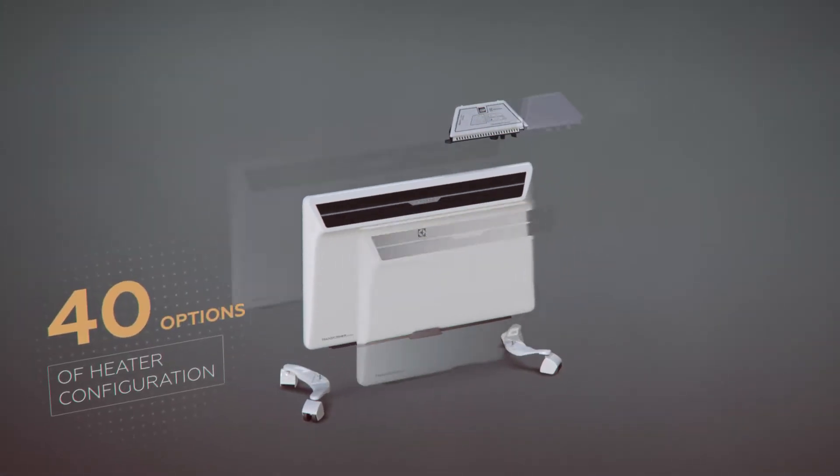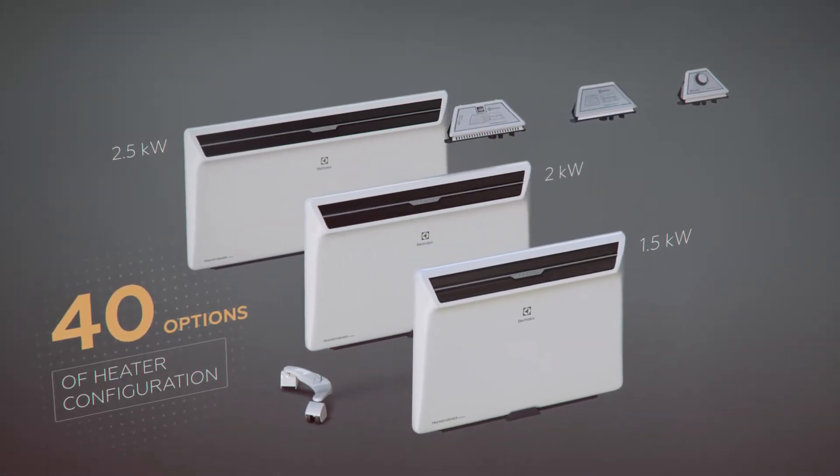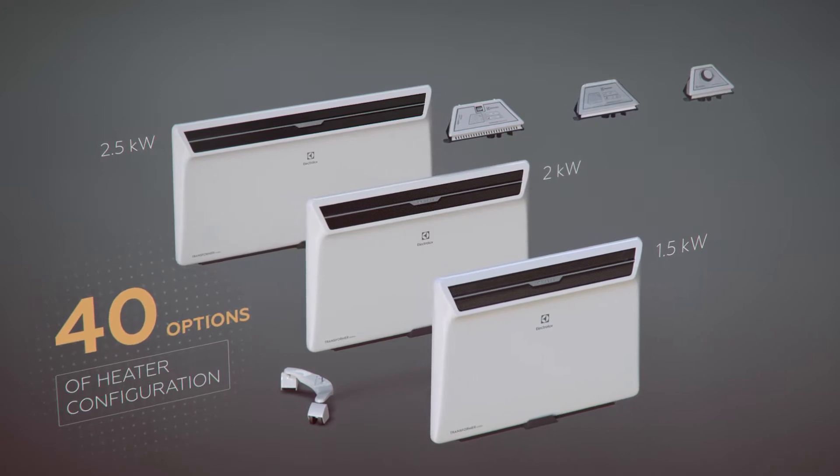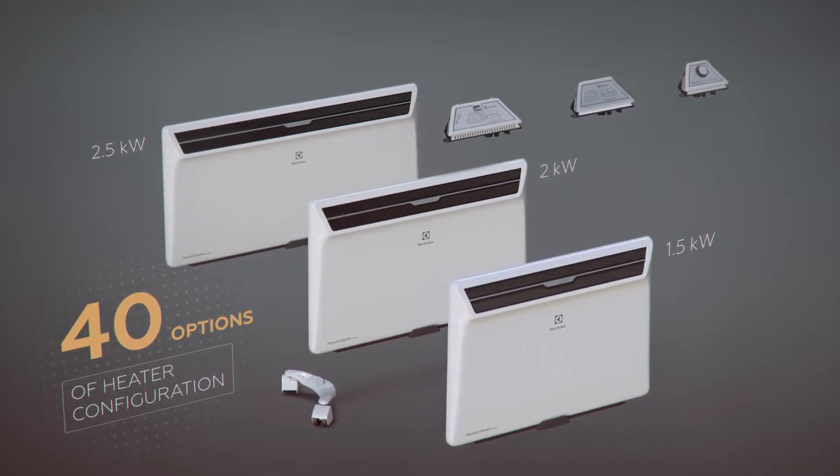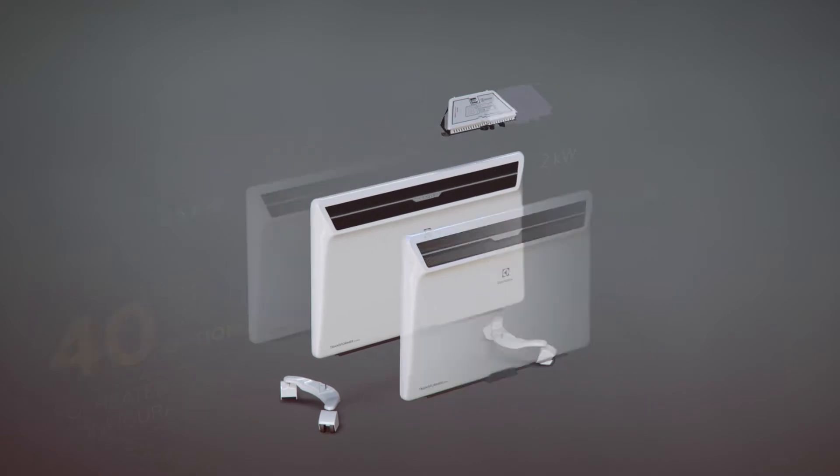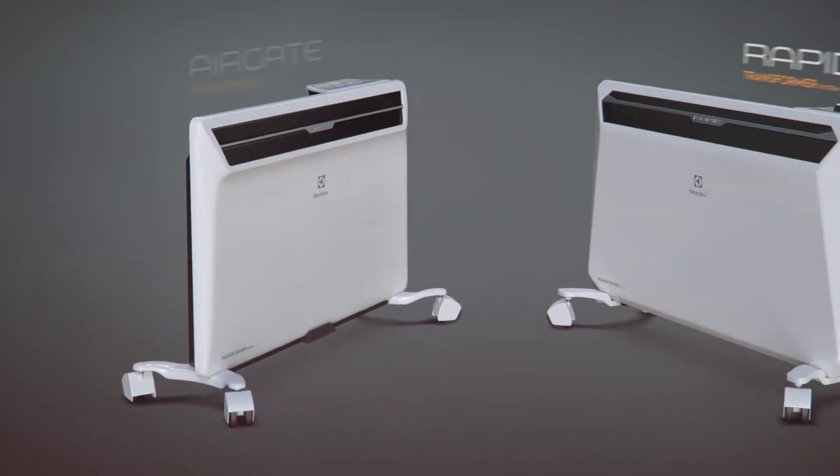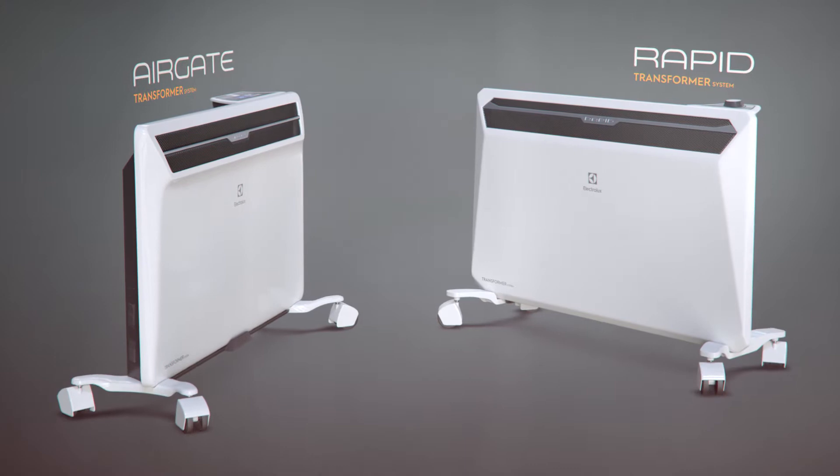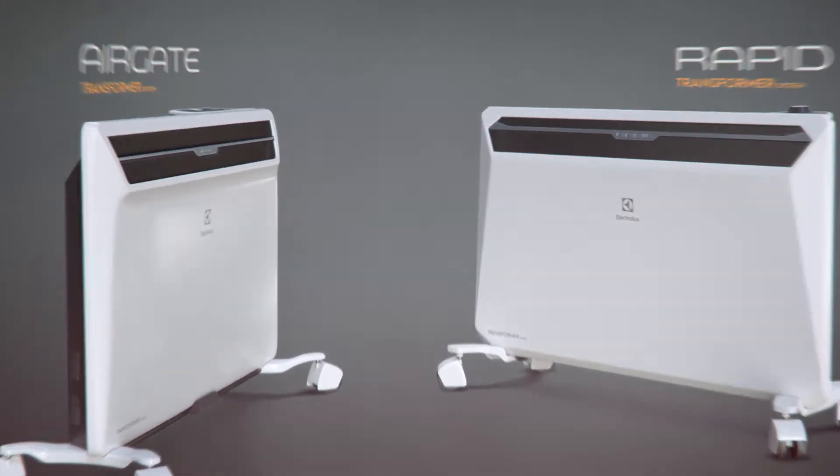The Electrolux Transformer System is the first ever convection heater that gives you absolute freedom to choose settings and installation types. Four power options, three types of control, two series of products: Air Gate Transformer System and Rapid Transformer System.